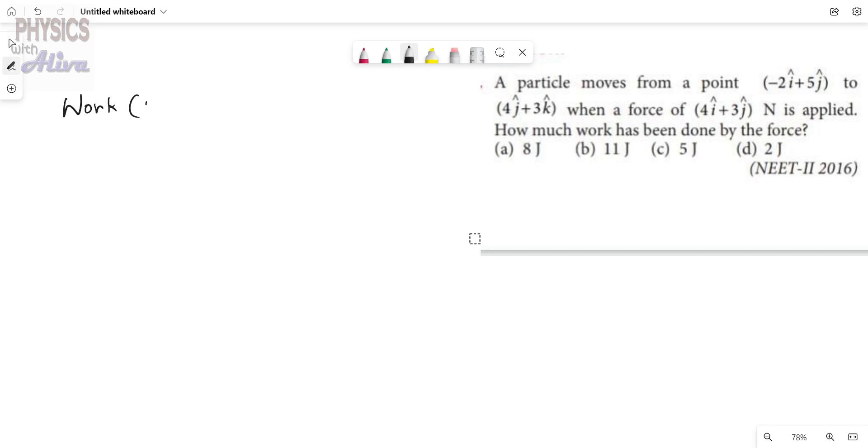The formula of work is force dot displacement. Here the force is given, that is 4i cap plus 3j cap Newton. And the particle is moving from a point, the starting point is A, suppose, and this is the ending point.